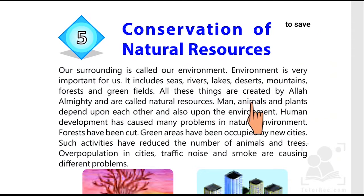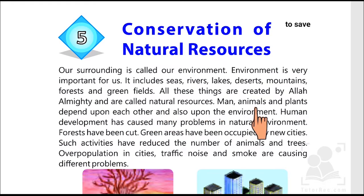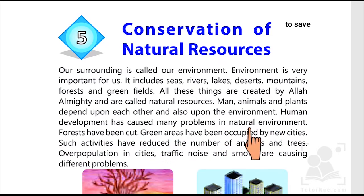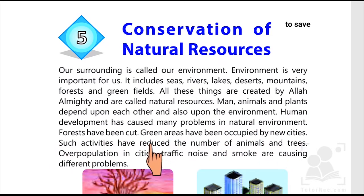Men, animals and plants depend upon each other and also upon the environment. Human development has caused many problems in the natural environment. Forests have been cut, and green areas have been occupied by new cities. Such activities have reduced the number of animals and trees.